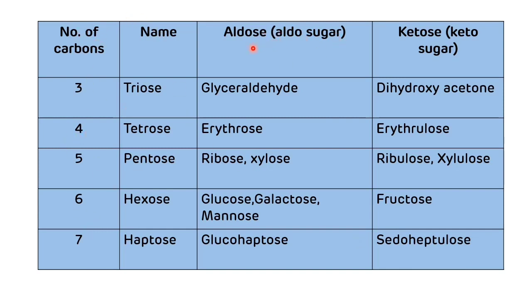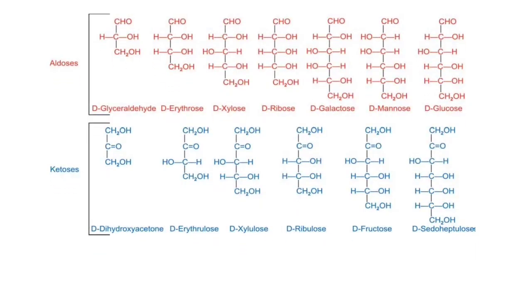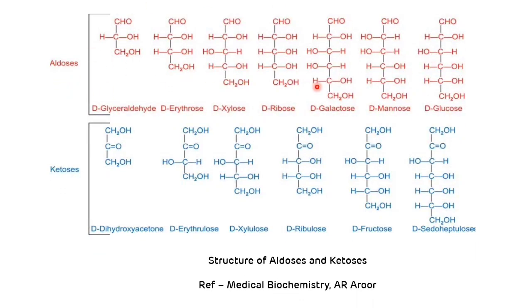These are the various examples of monosaccharides based on number of carbon units and presence of functional groups. This picture shows the structure of aldoses and ketoses — the structures of various aldo-sugars and keto-sugars. Among all of these, glyceraldehyde is the simplest form of carbohydrate and is used as a reference carbohydrate to study the structure of other carbohydrates.